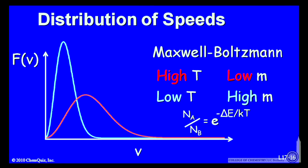Now where does the root mean squared velocity fall on these plots? It actually falls just to the side of the most probable velocity. The most probable velocity would be the peak of the curve.